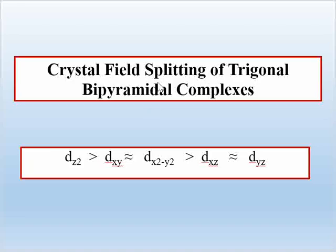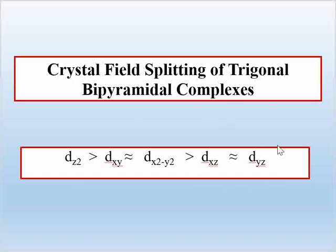The next example is the crystal field splitting of trigonal bipyramidal complexes. In trigonal bipyramidal complexes, you will find a different sequence of energy of d orbitals: dz² has the highest energy, and dxz and dyz have the lowest energy.